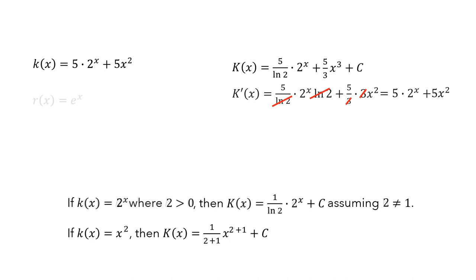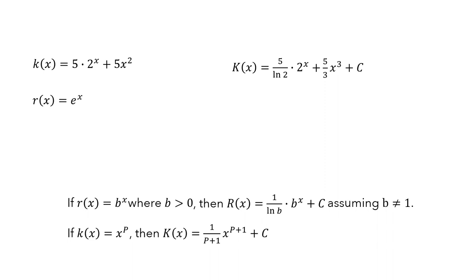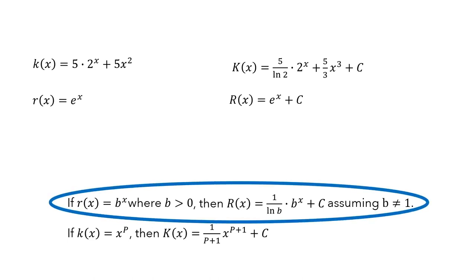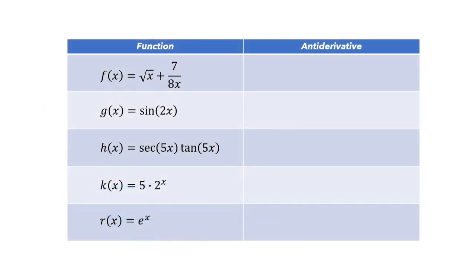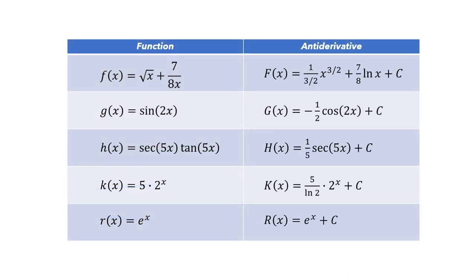For our last example, let's look at e to the x. The derivative of e to the x is e to the x, so the antiderivative should be e to the x plus c. We also have a rule for exponential functions — if we use e as the base, the antiderivative is 1 divided by the natural log of e times e to the x plus c. Since the natural log of e equals 1, this simplifies to e to the x plus c, which matches our guess. To summarize, we started with these five functions and used the rules to compute antiderivatives for each of them.